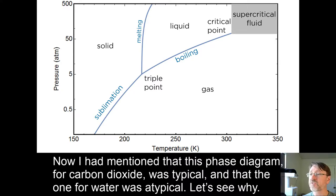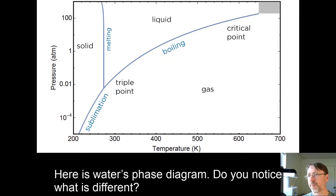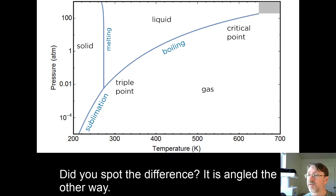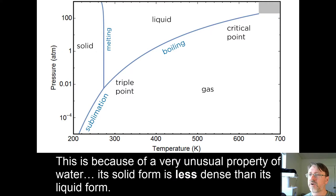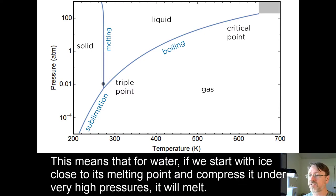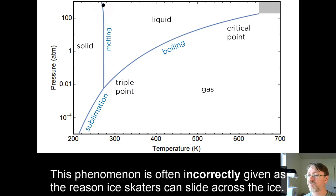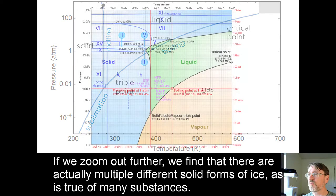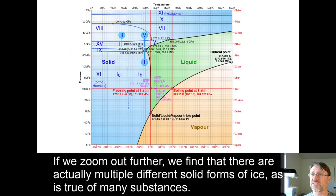Now, I had mentioned that this phase diagram for carbon dioxide was typical, and that the one for water was atypical. Let's see why. Here is water's phase diagram. Do you notice what is different? Did you spot the difference? It is angled the other way. This is because of a very unusual property of water. Its solid form is less dense than its liquid form. This is why ice floats in water. Nearly every other substance, when it freezes, becomes more dense, and so the solid sinks. This means that for water, if we start with ice close to its melting point and compress it under very high pressures, it will melt. This phenomenon is often incorrectly given as the reason ice skaters can slide across the ice.